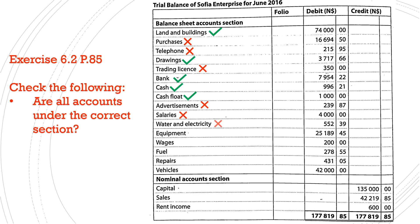Advertisements, salaries, water, and electricity are all expenses. Equipment is an asset. Wages, fuel, and repairs are all expenses. And vehicles is an asset. In the nominal account section, we have capital, which is an account that must be under the balance sheet account section. And sales and income are both income accounts, therefore in the correct section.